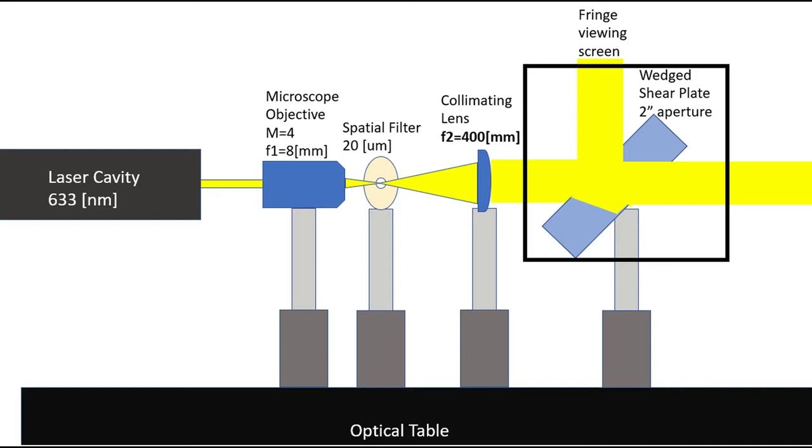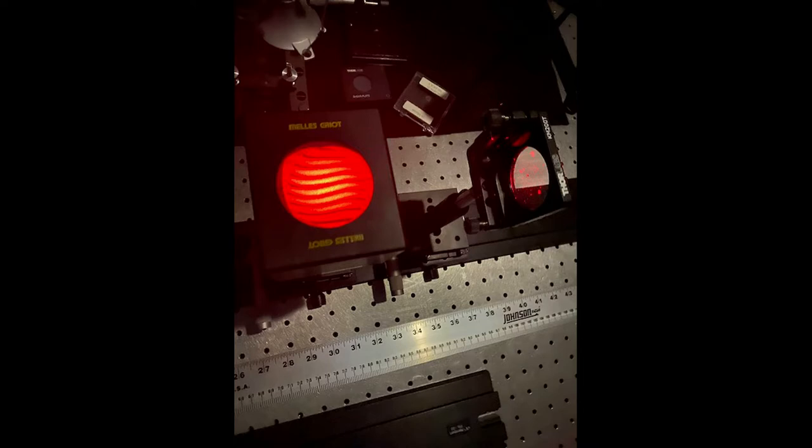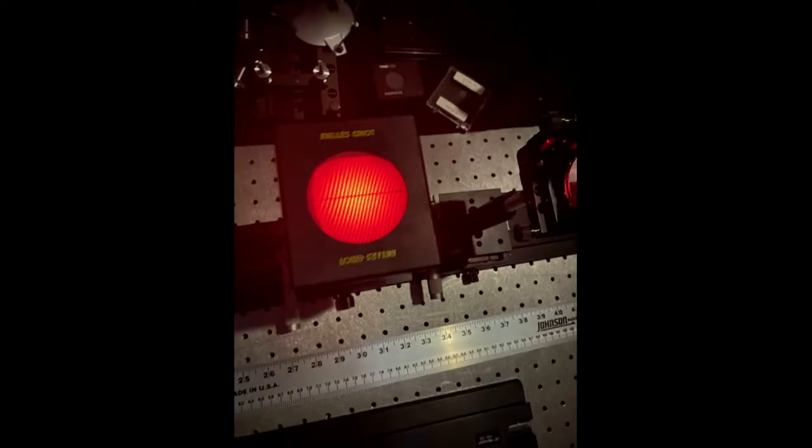we introduced a shear plate to check for collimation. We used the 2-inch wedged shear plate as opposed to the 1-inch since we found in lab 3 that we got better testing sensitivity using the larger one.